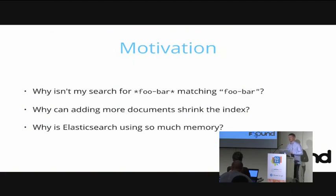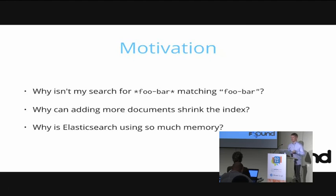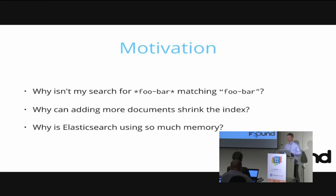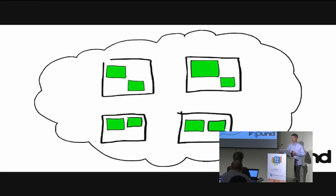I have an impression of the challenges developers face with basic usage of Elasticsearch. This is background theory I have great experience sharing. The kinds of questions you'll hopefully be better able to answer are: why isn't my search returning what I expect, even if I search for exactly the same text as in my document? How can deleting documents not shrink the index while adding documents can make it smaller? And why does Elasticsearch use so much memory?